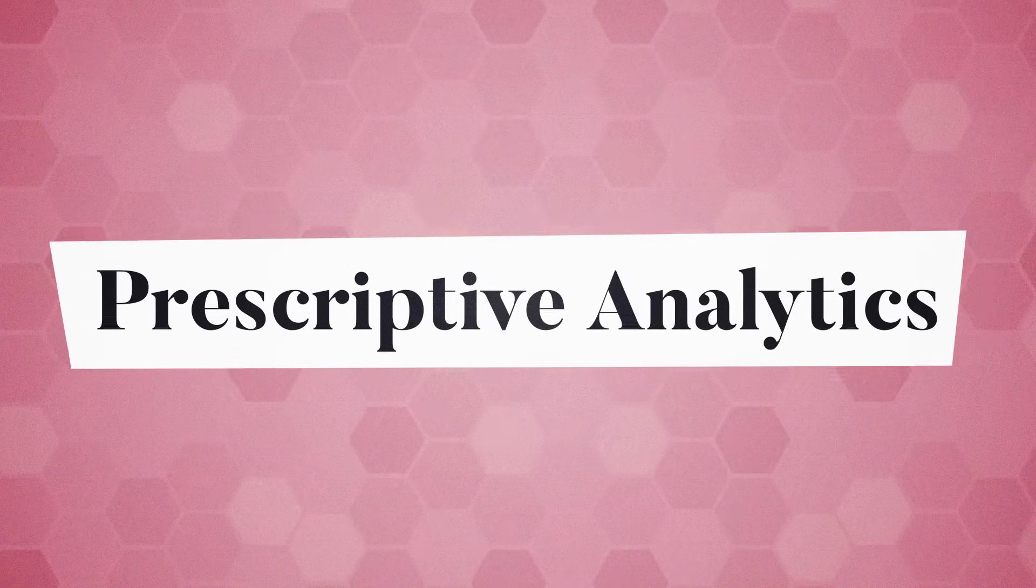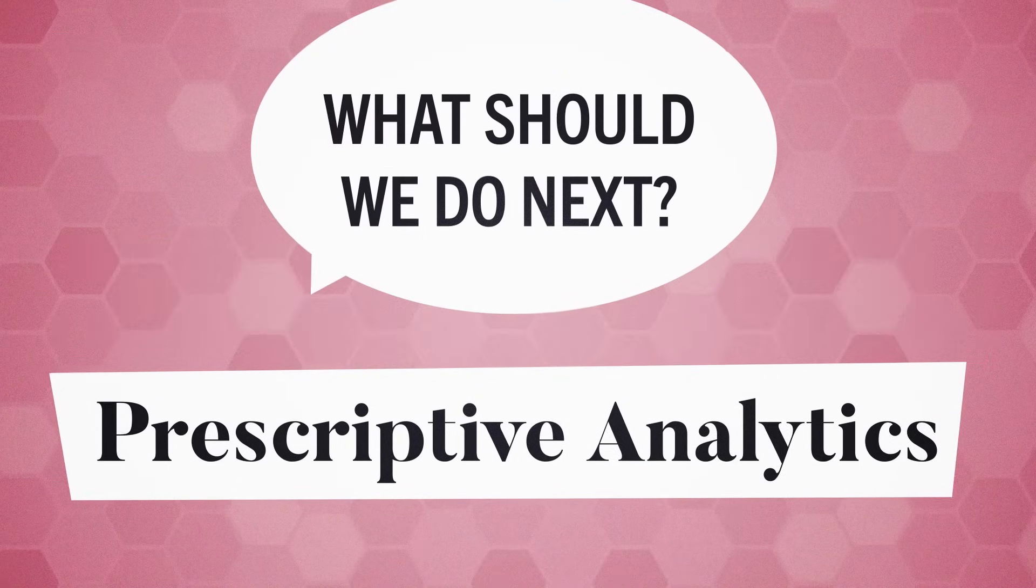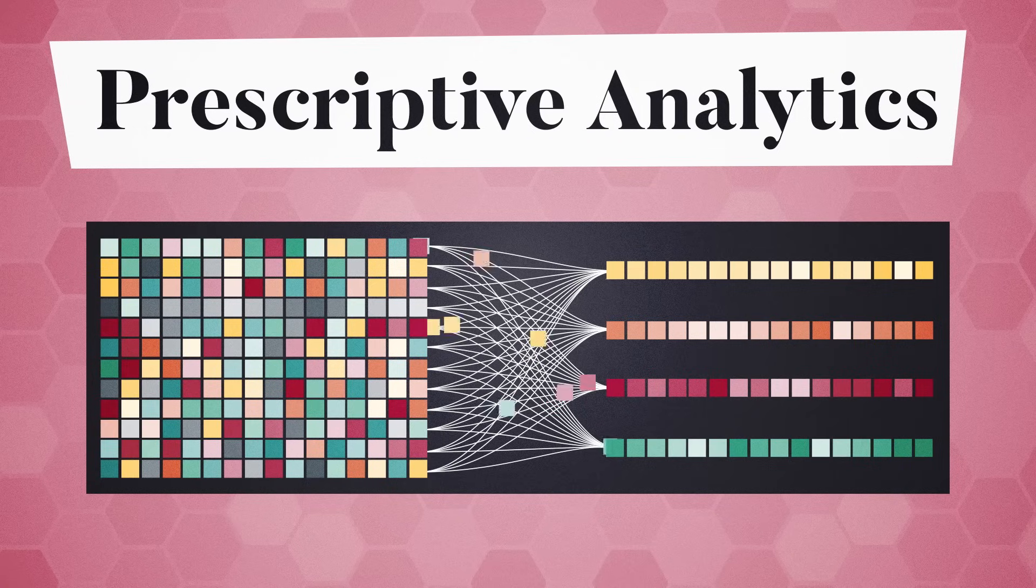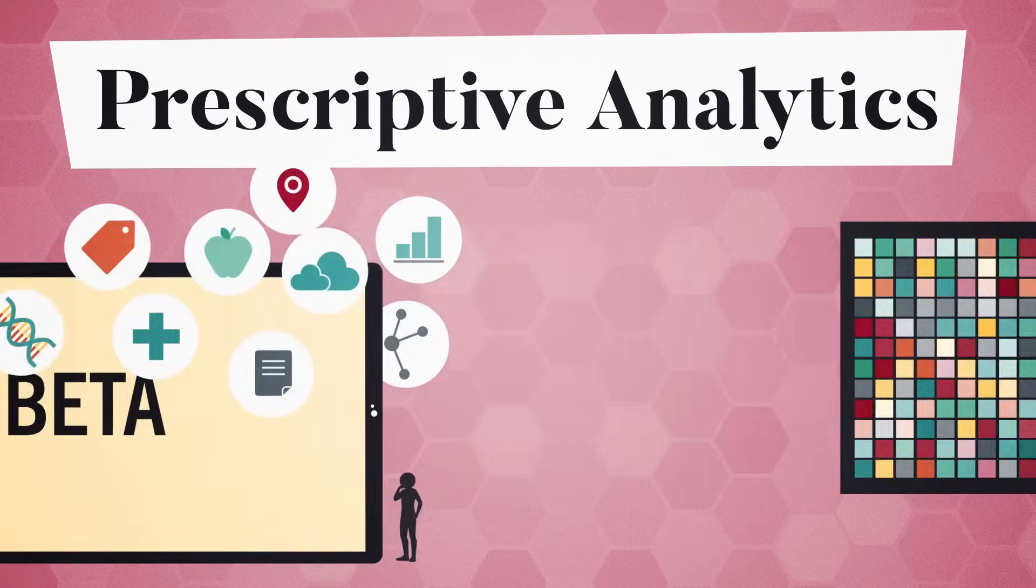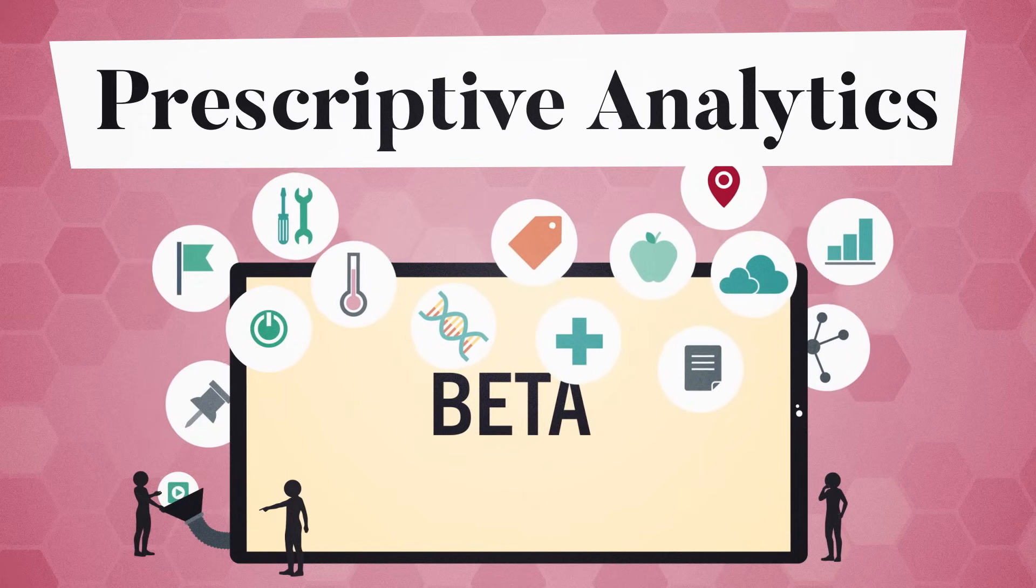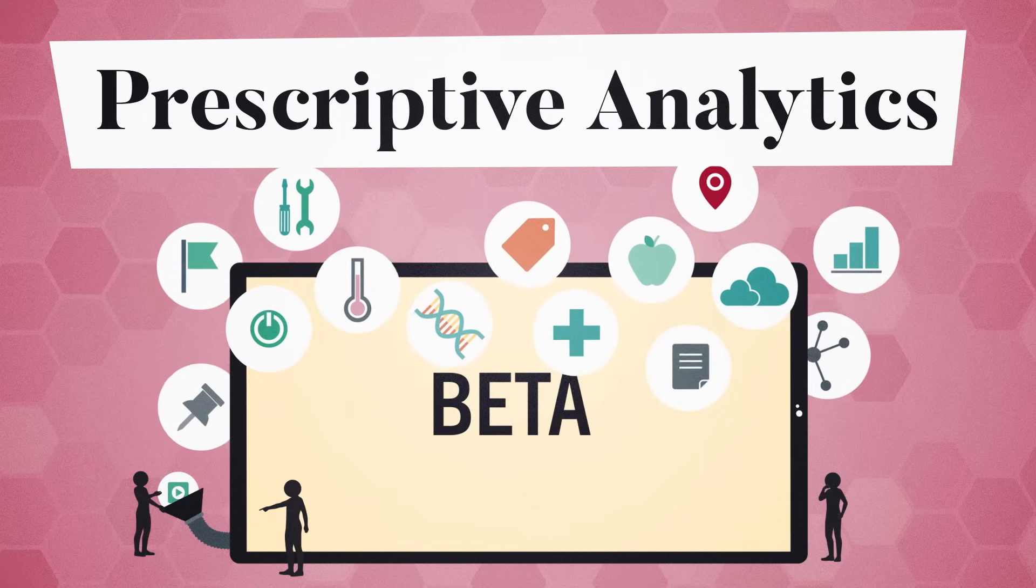Prescriptive analytics answers what should we do next? It involves considering all relevant data to chart an optimal path forward. Product managers for a new mobile app can employ beta testing to determine which features to include or exclude to optimize the user experience.